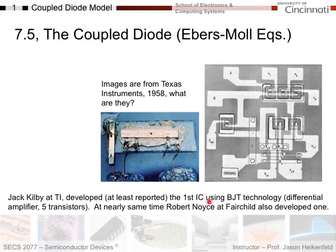The first integrated circuits used BJT technology. It is actually a differential amplifier with five transistors. This one was developed by Jack Kilby at TI. About the same time, Robert Noyce at Fairchild also developed one.